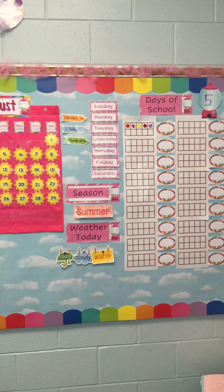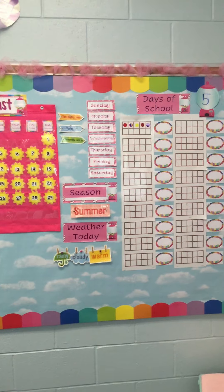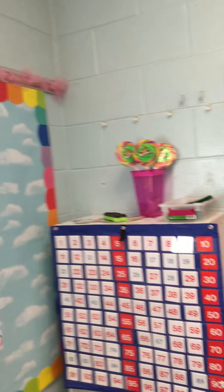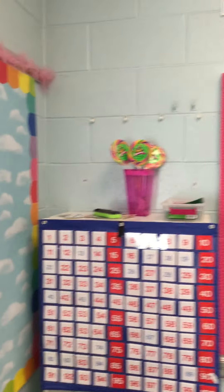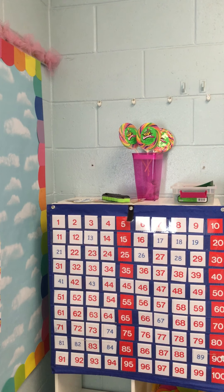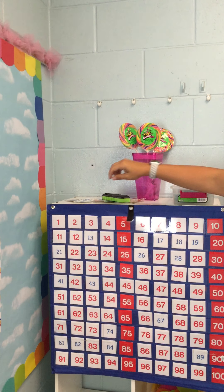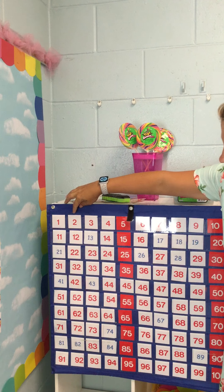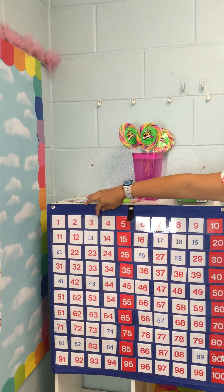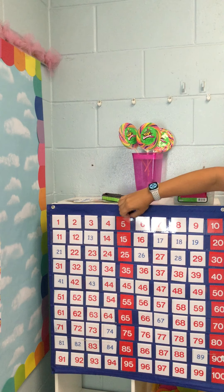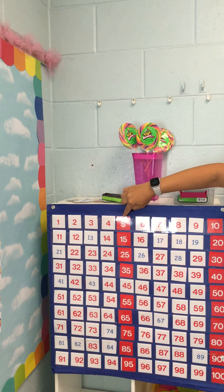We're going to actually count the numbers one through five. So we're going to count: one, two, three, four, and there it is — five.